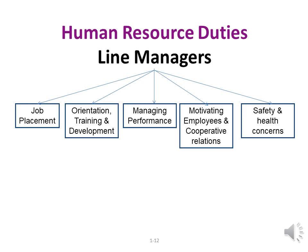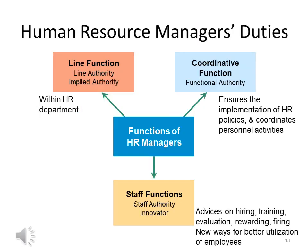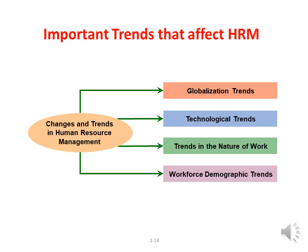Line managers deal with many aspects of human resource management functions, like job placement, orientation and training, managing the performance of department employees, motivating employees, and caring about safety and health conditions. Human resource managers have three main categories of duties: first, a line function or line authority within the HR department; second, staff functions with staff authority to advise on hiring, training, evaluating, rewarding, and firing employees; and third, a coordinating function or functional authority to ensure the implementation of HR policies and coordinate personnel activities.